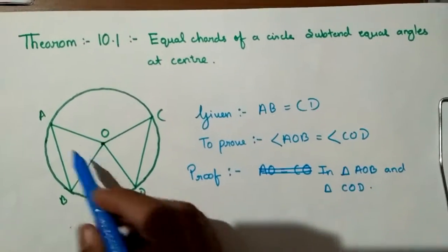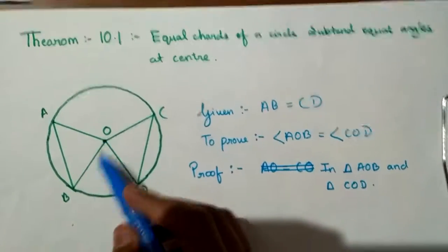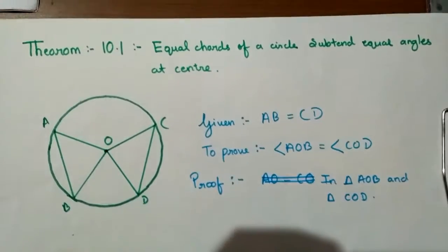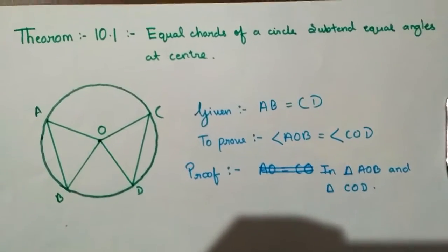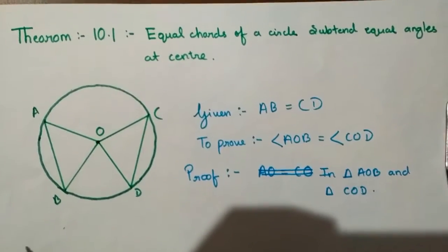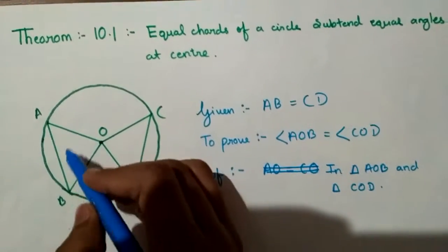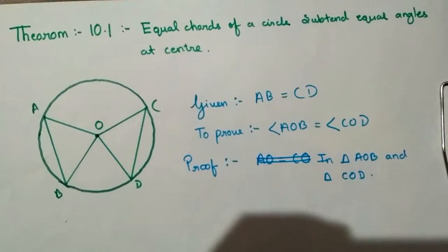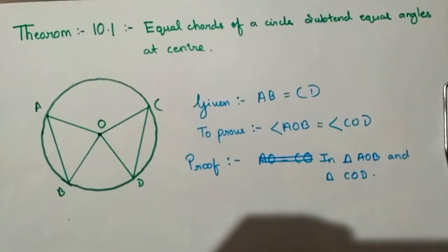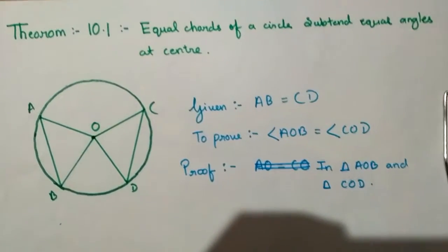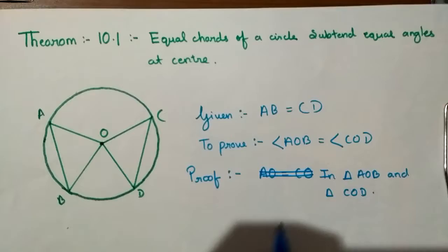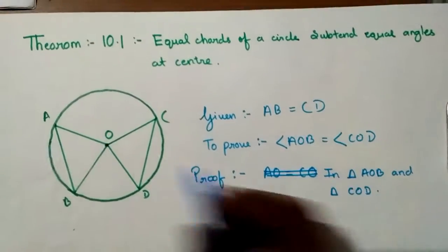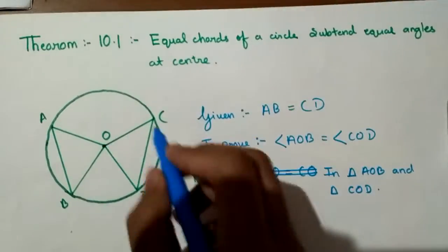So, given: AB equal to CD, and we have to prove that angle AOB is equal to angle COD. To prove this, I will use congruency between triangle AOB and triangle COD. Let's start the proof.